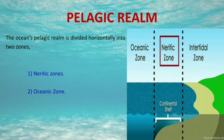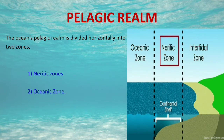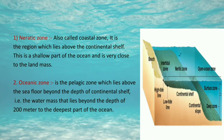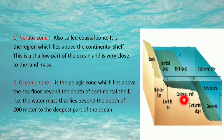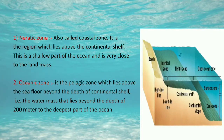The pelagic realm is divided horizontally into two zones: the neritic zone and the oceanic zone. First, we will study the neritic zone, which is also called the coastal zone. It is the region which lies above the continental shelf — a shallow part of the ocean very close to the landmass. As we can see in the diagram, this region is clearly labeled the neritic zone.